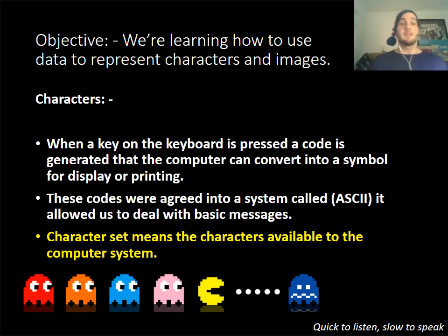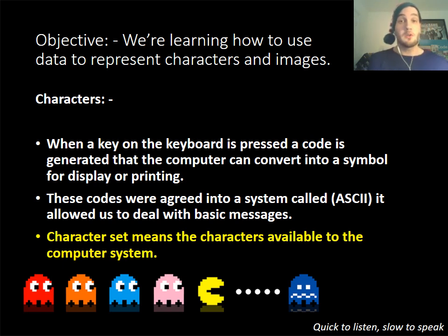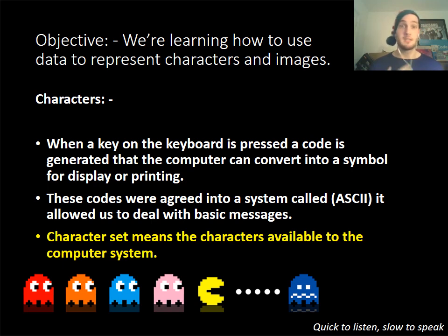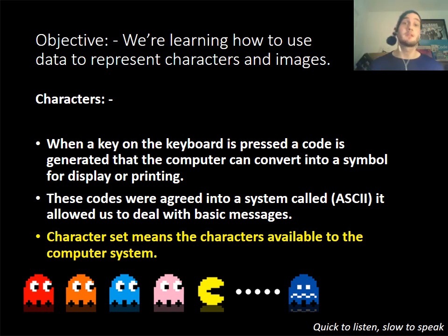What you're going to learn about today is how to represent characters and images. What you will need to know about in the exam is how computers represent characters. First of all, you need to know what a character set is. A character set is the letters and numbers available to the computer system - A, B, C, D, E, F, G and so on. It's the letters that are available.